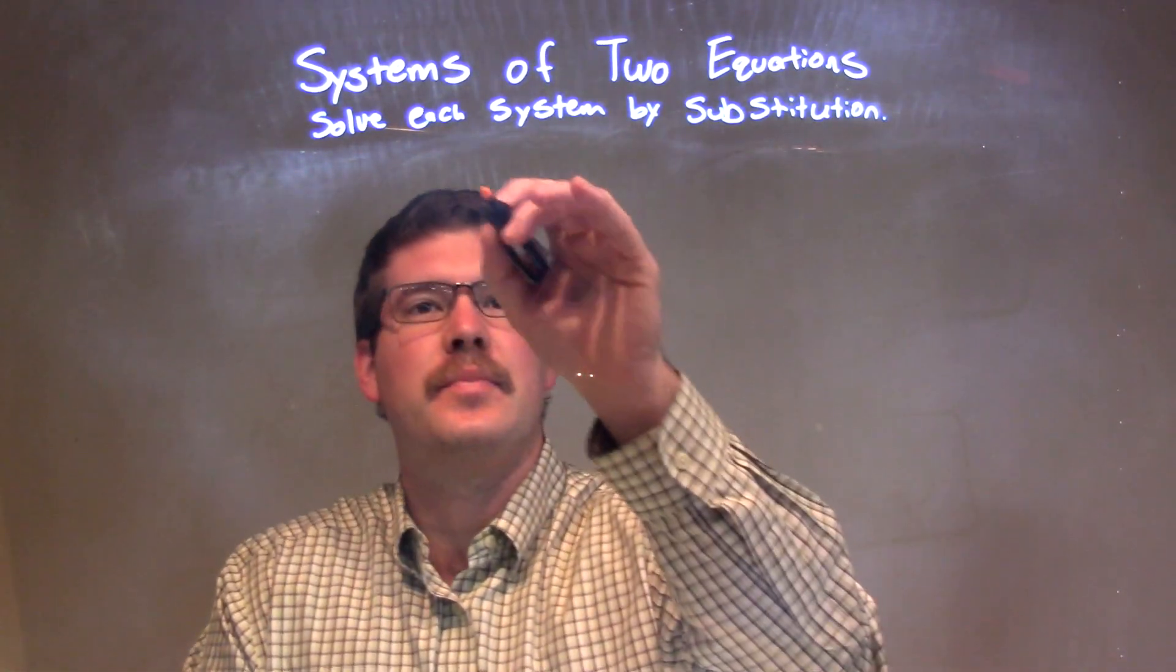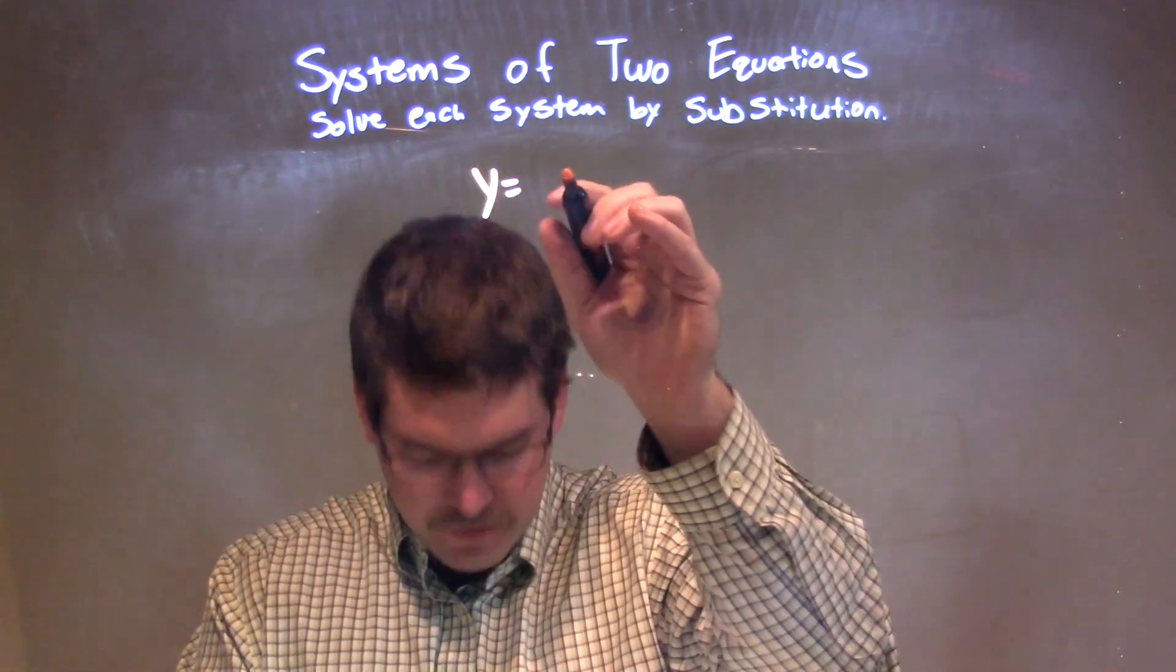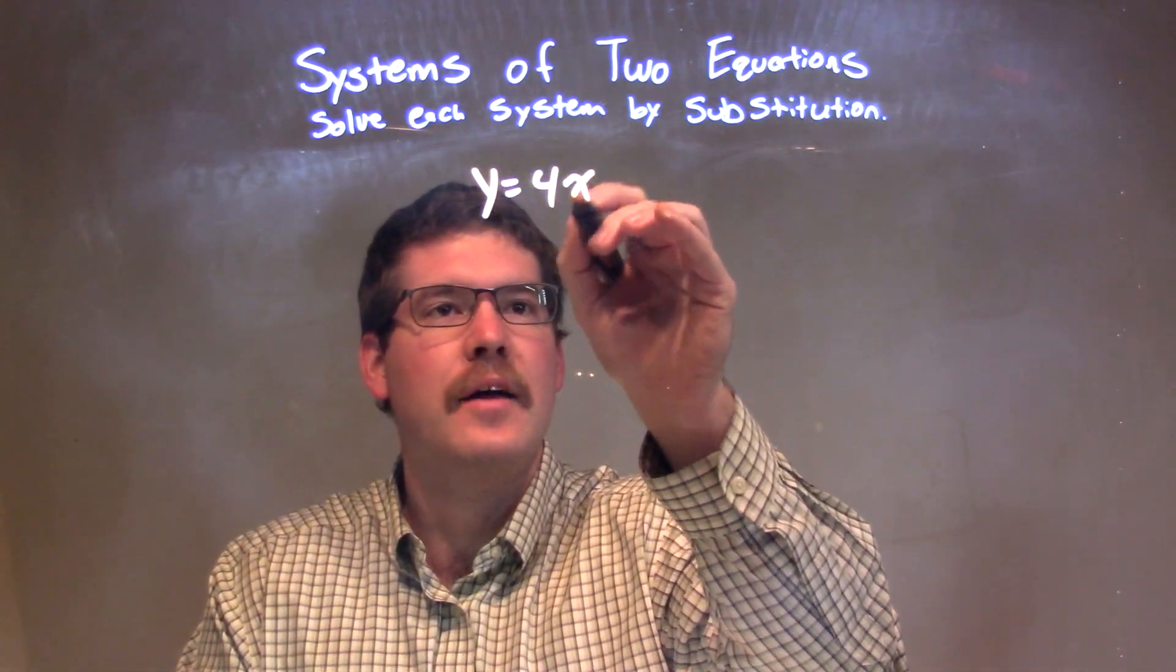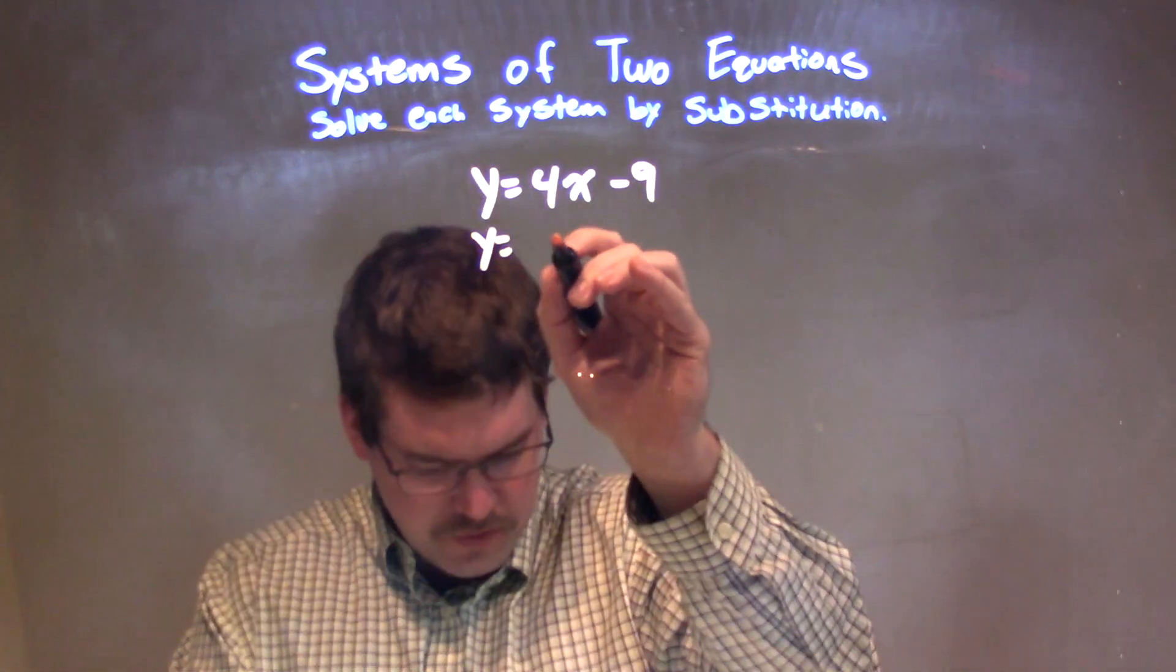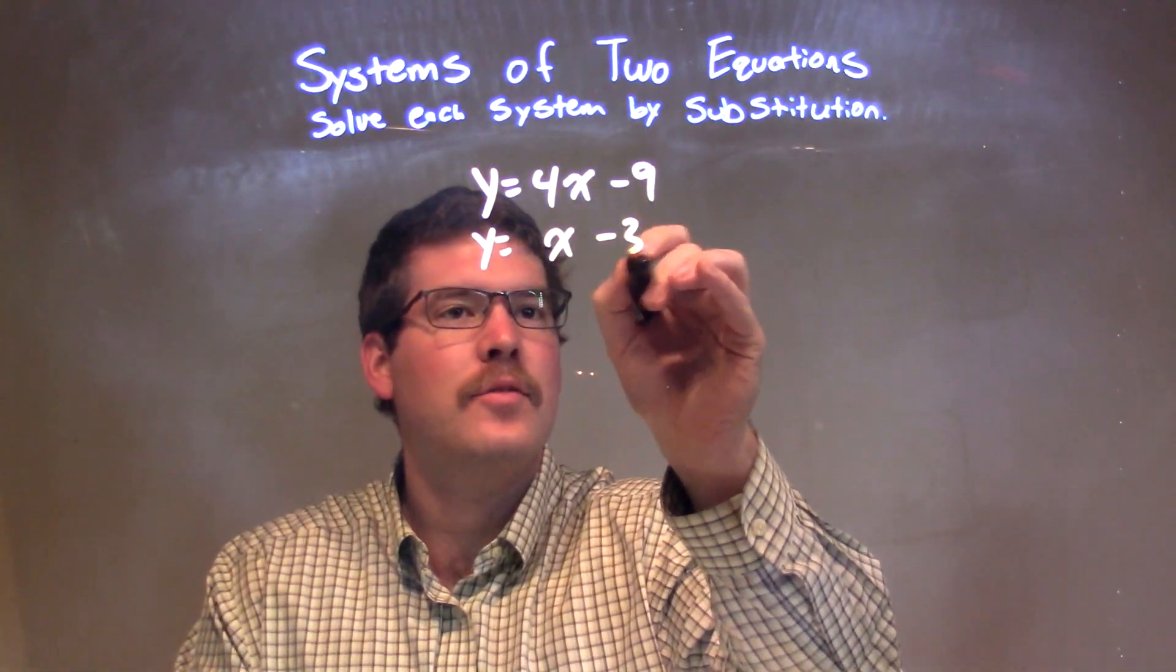If I was given this problem: y equals 4x minus 9, and y equals x minus 3.